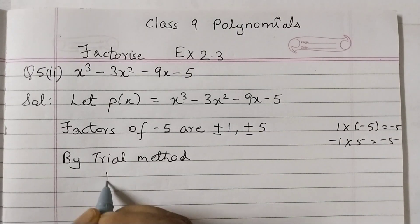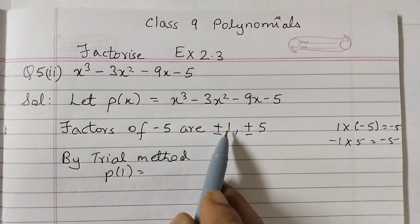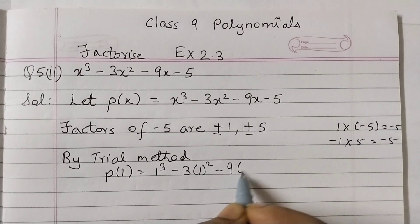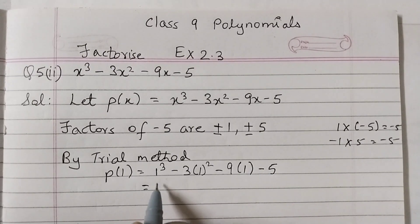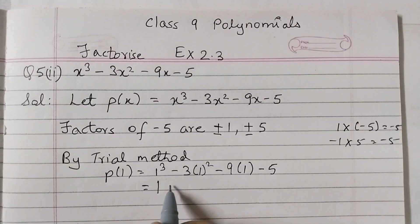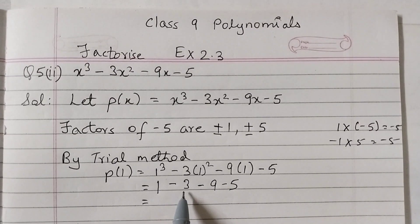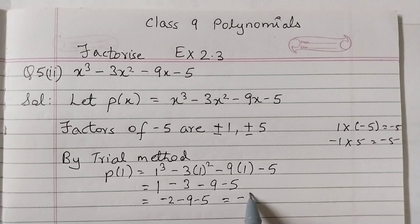So let's try with P of 1. Wherever x is there, substitute 1: 1 cubed minus 3, 1 squared minus 9, 1 minus 5. Simplify: 1 minus 3, minus 9, minus 5. So 1 minus 3 is minus 2, minus 9, minus 5, that equals to minus 16.